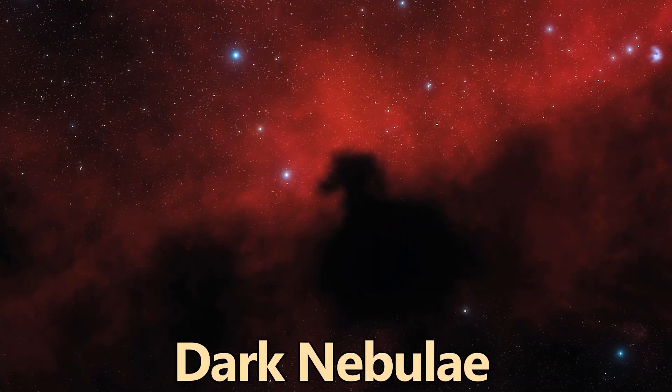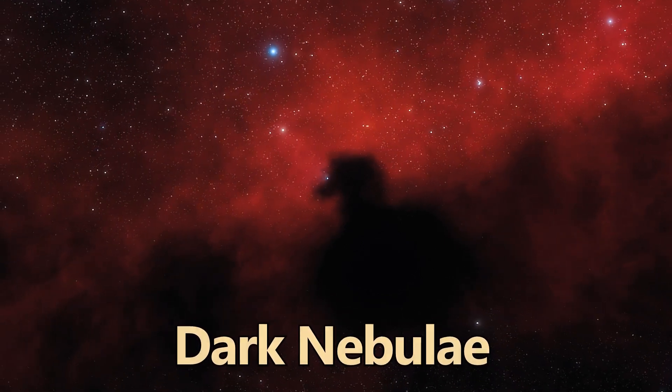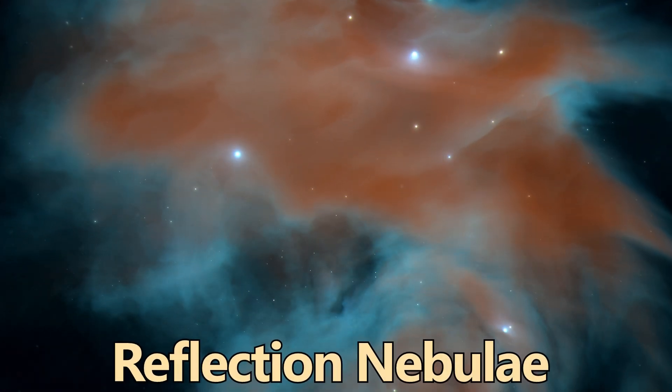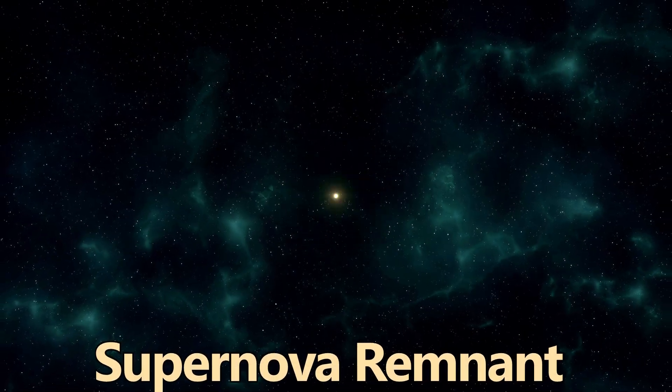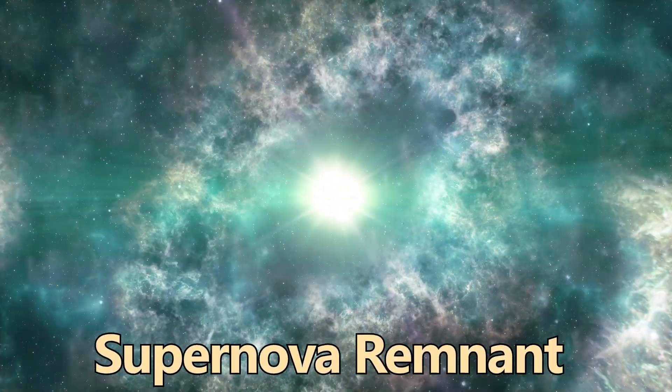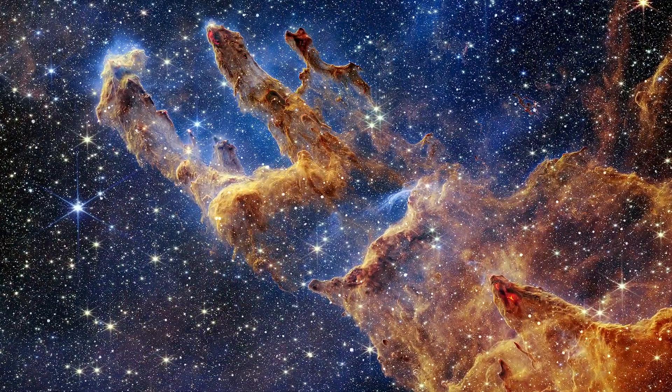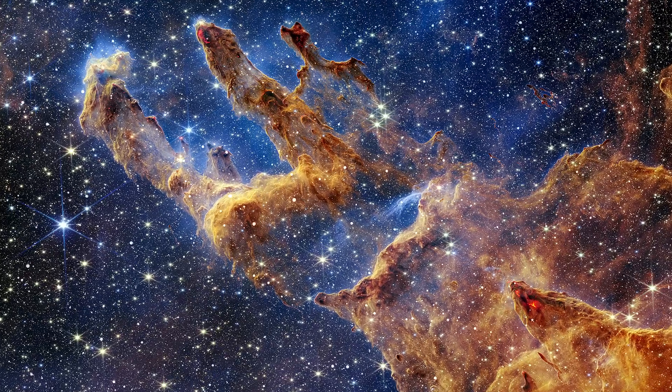Dark nebulae, such as the Horsehead Nebula, are dense clouds that block light, creating stunning silhouettes. Reflection nebulae reflect light from nearby stars, while supernova remnants are nebulae left from stellar explosions. The Eagle Nebula and the Carina Nebula are prolific star-forming regions, giving birth to many new stars.